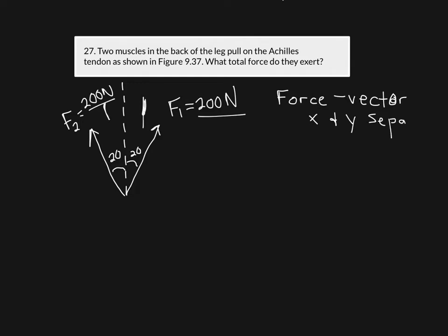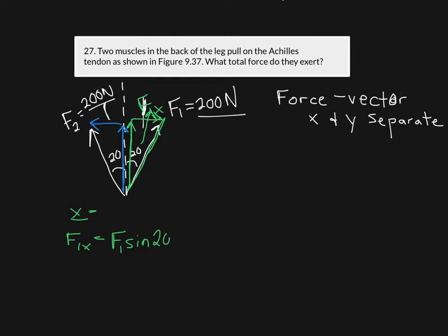I have to break these forces up into their requisite components — some force acting in the x direction and some in the y. I can imagine a little bit of F2 going up and a little bit going over, and the same for F1. For the x component, F1x is the opposite side of the triangle from the angle, so F1x equals F1 times the sine of 20 degrees.